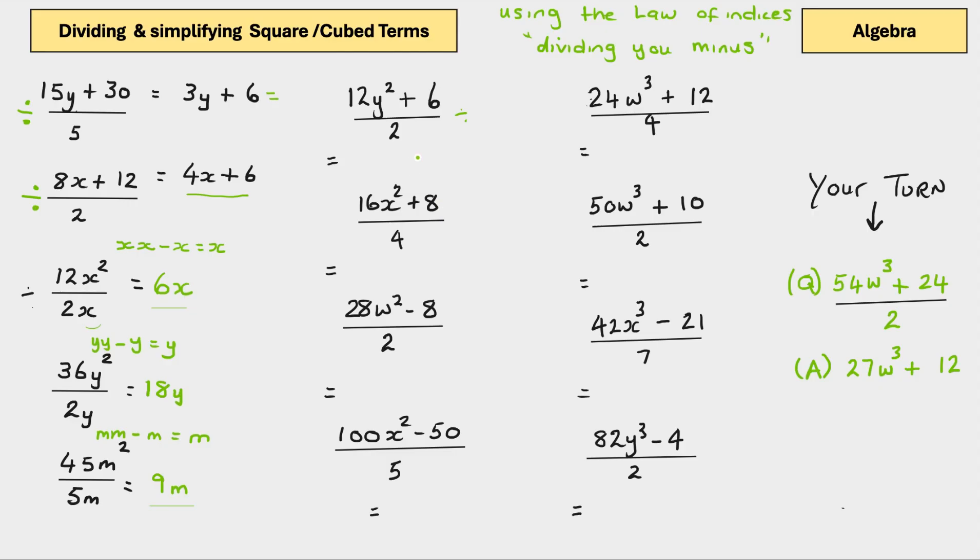Using exactly the same, it's a divide, and we've got a squared number. 12y squared plus 6 divided by 2. So, 2 divided by 12 is 6. We've got y squared. Now, is there a y underneath? No, there is not. So, we're just going to keep this as 6y squared plus 2 divided by 6 is 3.